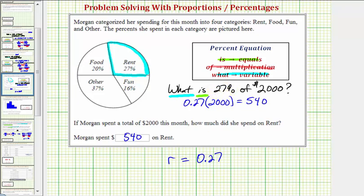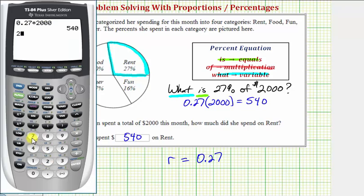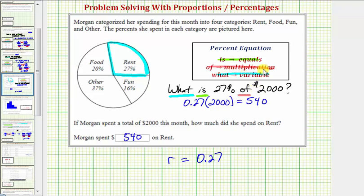Notice how in the calculator 27 divided by 100 does give us 0.27. Next we have the keyword 'of,' of means multiplication, so we have times, and then we have the number 2,000.